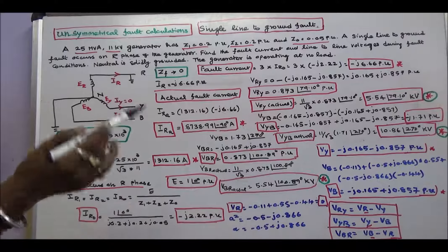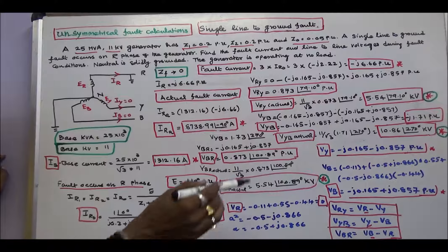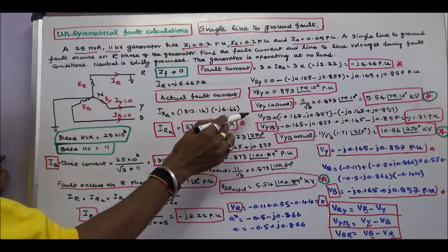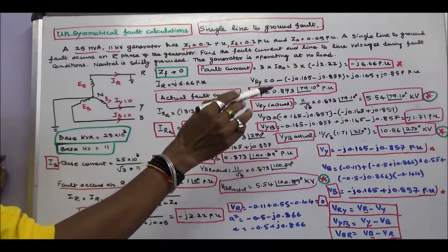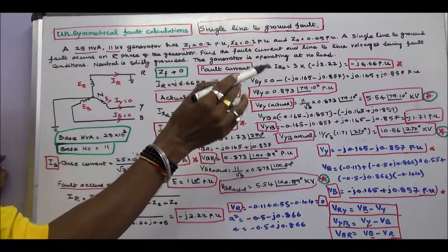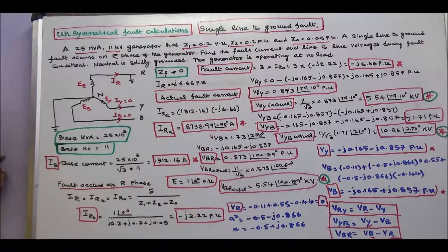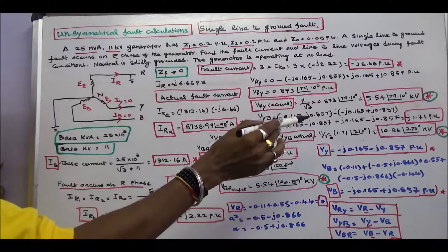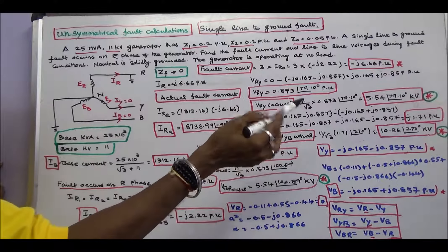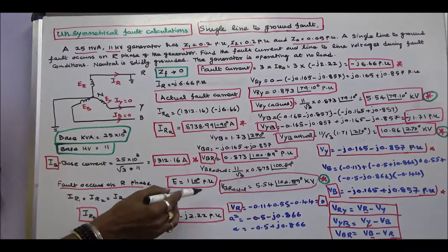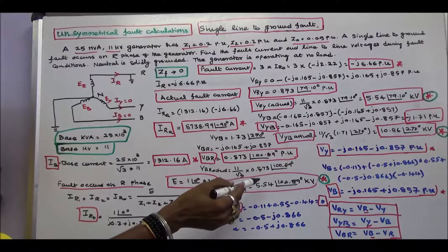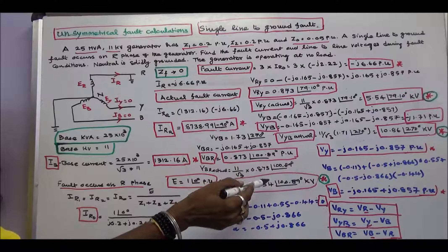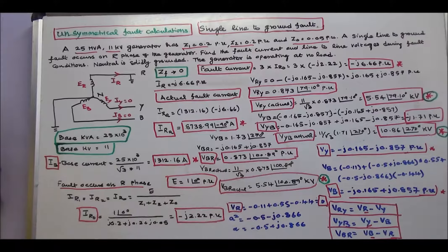Therefore, the line-to-line voltages during the fault condition are: VRY equals 5.54 angle 79.10 degrees KV, VYB equals 10.86 angle 270 degrees KV, and VBR equals 5.54 angle 100.89 degrees KV. With this, I conclude my lecture. Thanks for listening.